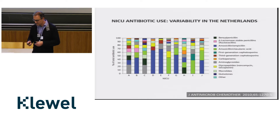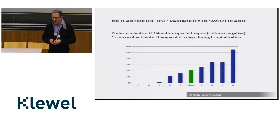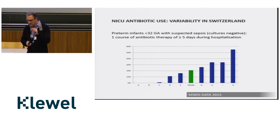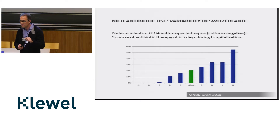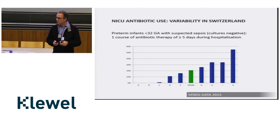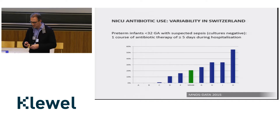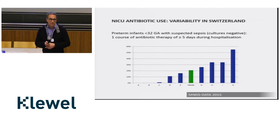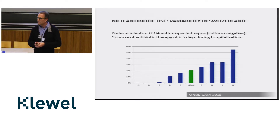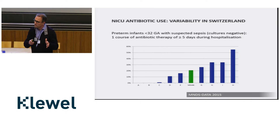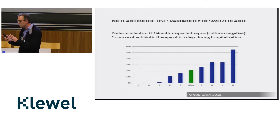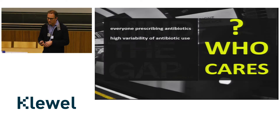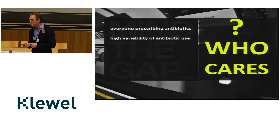How is the situation in Switzerland? We don't really know. In the MNS data there is one indicator asking whether we are giving preterm infants below 32 weeks antibiotics for 5 days or more without a positive culture. Looking at this in 2015, we have about 3 units giving almost never antibiotics for 5 days or more, and other units giving them to a third or half of their babies below 32 weeks with a negative culture. There is high variability of antibiotic use in our NICUs.